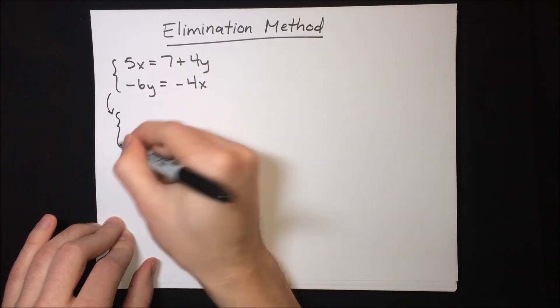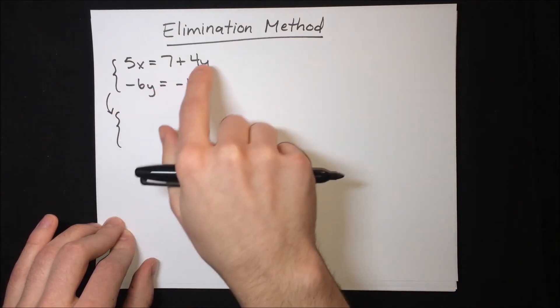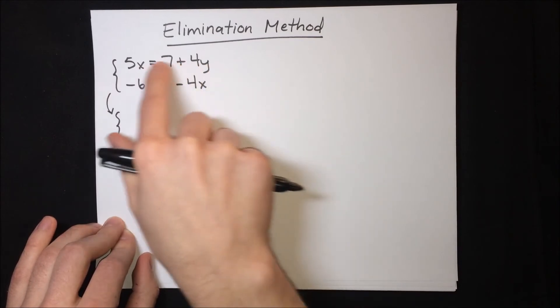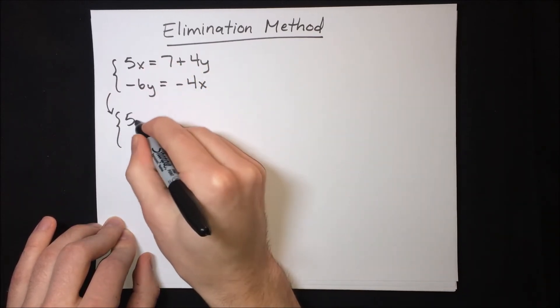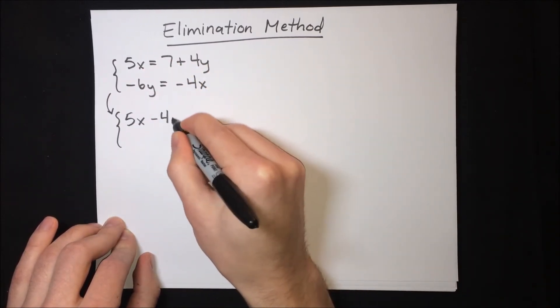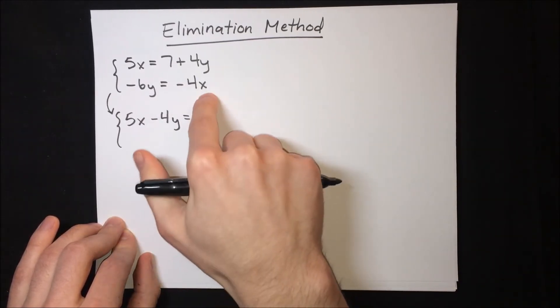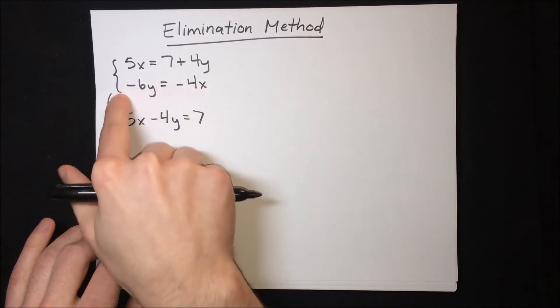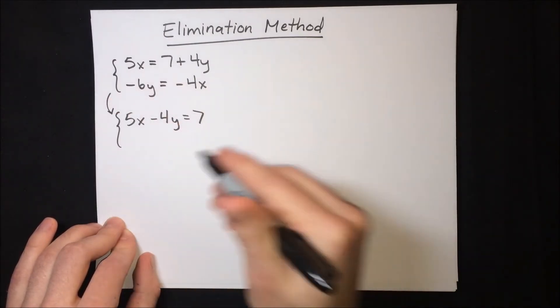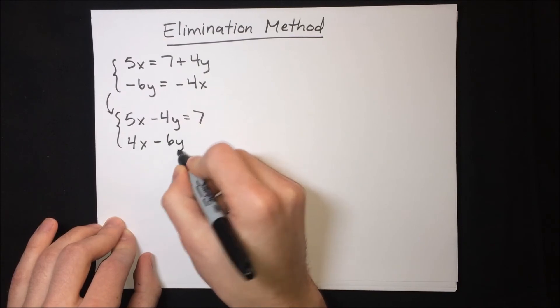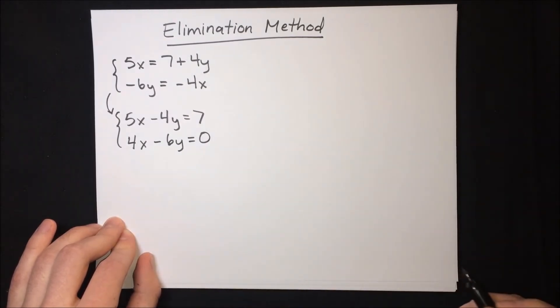Let's put the x with the x and the y with the y. So let's move this 4y in the first equation over to the other side. Let's subtract 4y from both sides to get 5x minus 4y equals 7. And then let's get this negative 4x on the other side of the bottom equation. Let's add 4x to both sides. 4x minus 6y equals 0.